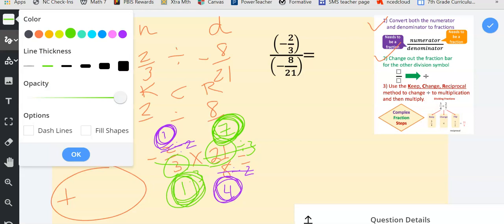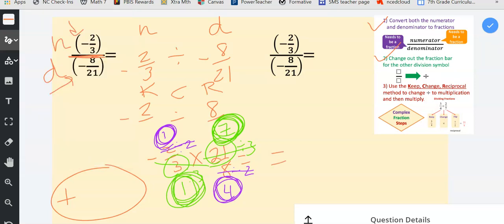And I reduce first, and now I'm going to multiply. So I multiply the numerators and get seven. I multiply the denominators and get four.